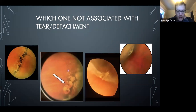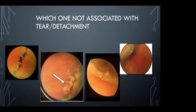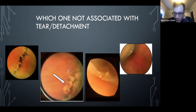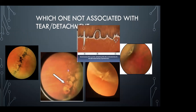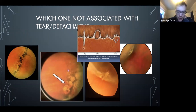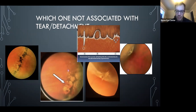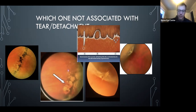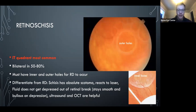Of the peripheral retinal findings shown, paving stone is not associated with tears or detachments. Lattice is associated. A meridian fold is only seen when looking at the ora serrata, often nasally where there are more dentate processes. Many people have meridian folds, but you can develop a hole or tear at the posterior tip, so technically they can be associated with detachments.